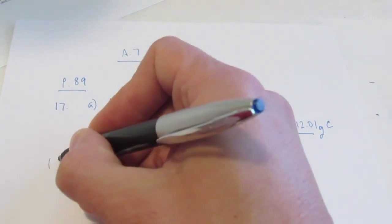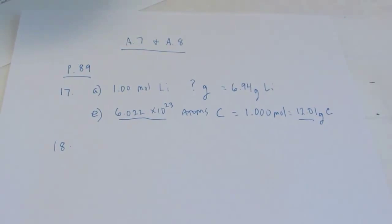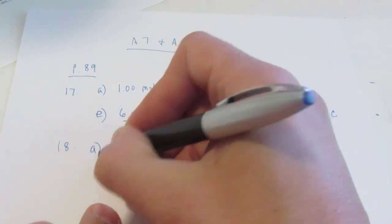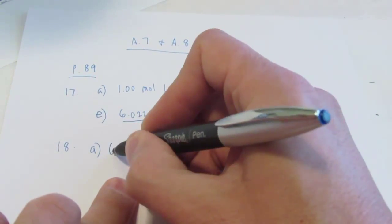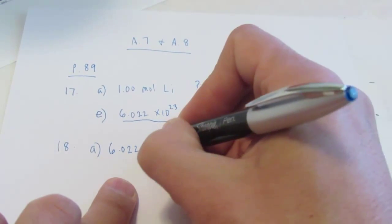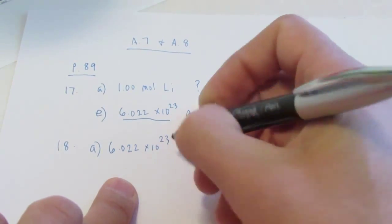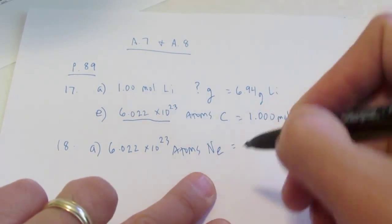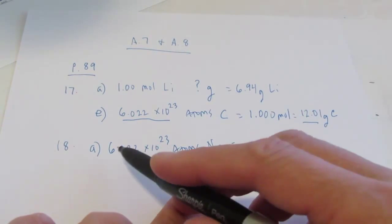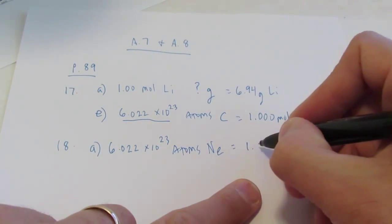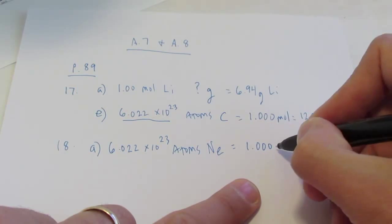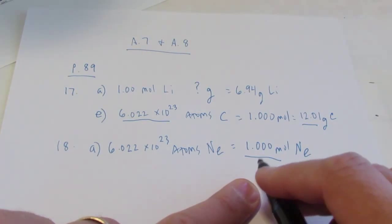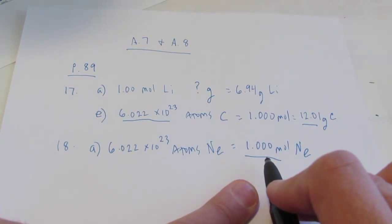Number 18 is pretty similar. It says, how many moles of atoms are there in each of the following? It starts off pretty easy: 6.022 times 10 to the 23rd atoms of neon. We want to know how many moles that is — that happens to be the numerical value of 1.000 moles of neon. This one did not ask for the mass, so we don't need to look it up. We just need to know how many moles of neon we have.